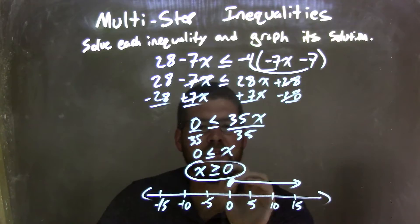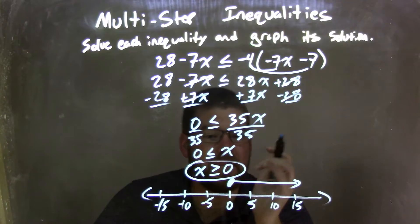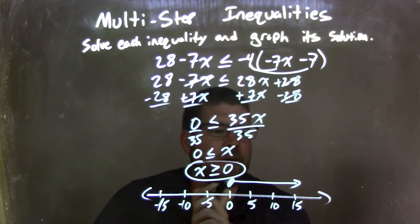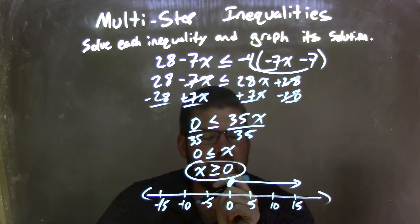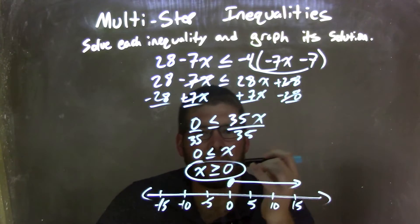And in doing so, I have to flip the inequality. So now I have x is greater than or equal to 0. So I need to make my graph here. I have a closed circle at 0 because x can equal 0, and I put my arrow to the right because x is greater than 0. So now my graph matches my inequality, which is x is greater than or equal to 0.